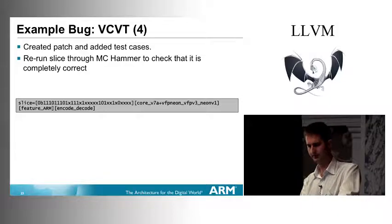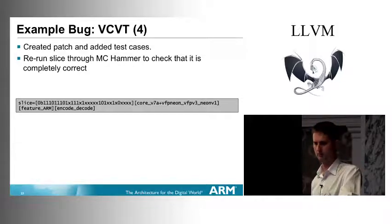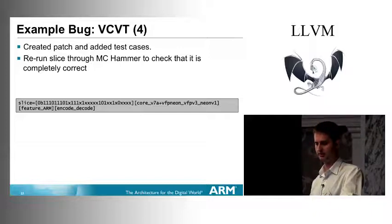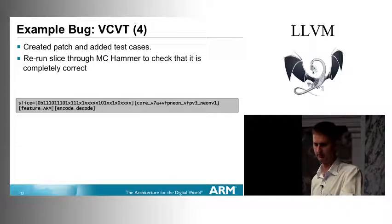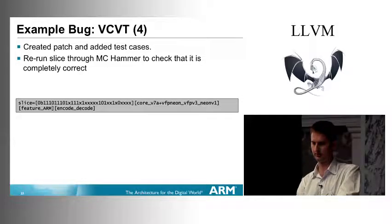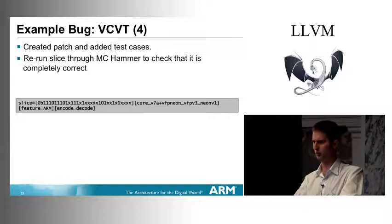How had this bug slipped through until now? Looking at the regression tests, they'd all been written with the zero register. By fluke, this was being encoded correctly for register zero and passing. But any other register would use register zero rather than the intended register. One lesson: if you're writing a regression test for a function you've implemented, please use non-zero registers — or at least don't always use zero registers.